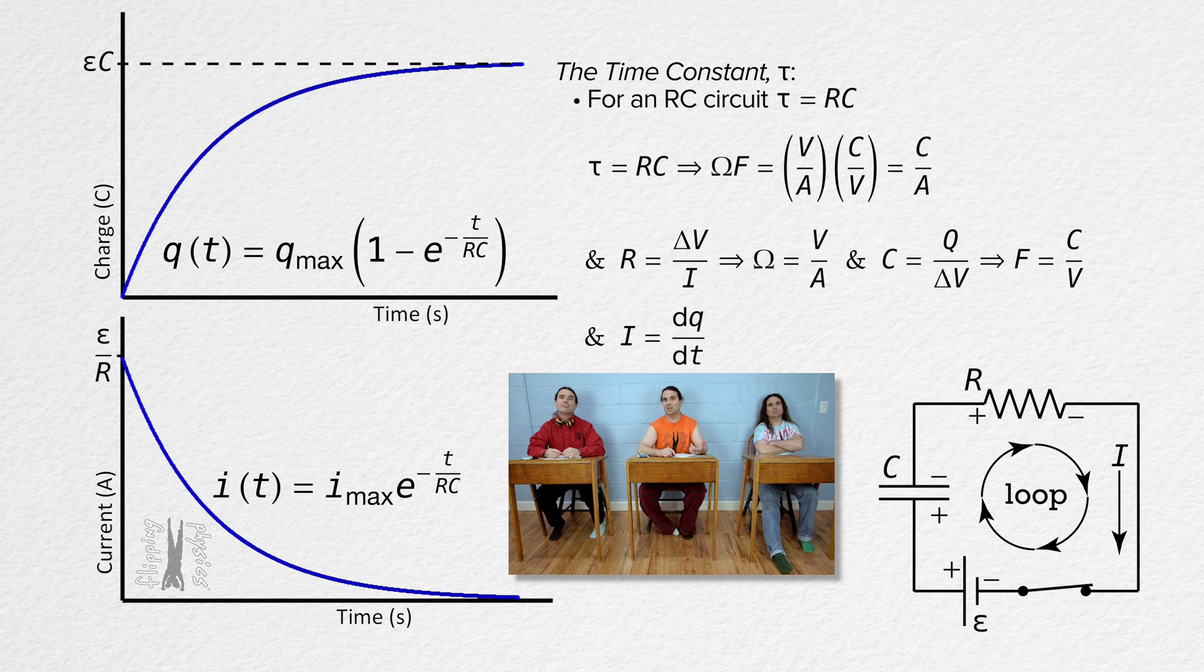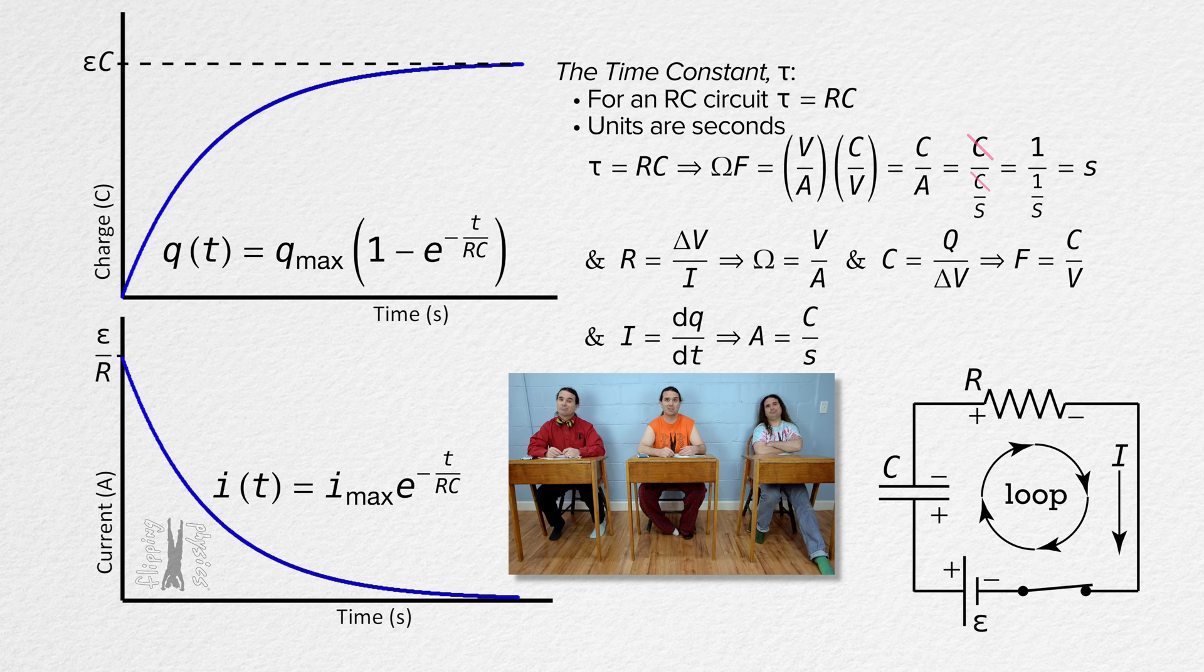Amps are, well, current equals the derivative of charge with respect to time. So amps are coulombs per second. Coulombs cancel out and 1 over 1 over seconds is just seconds. The units for the time constant are seconds.